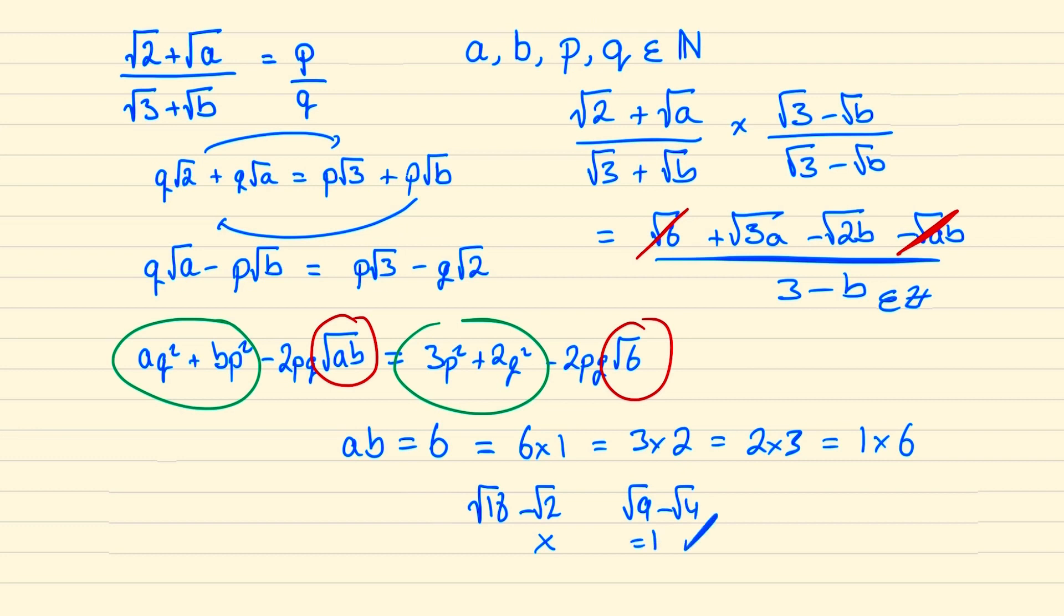In our third case we need to be a little bit careful because b is equal to 3 which means when we rationalize we times top and bottom by 0. And of course we can't do that so we'll have to go back to our original expression and that would just be 2 root 2 over 2 root 3 which is irrational so it doesn't work.